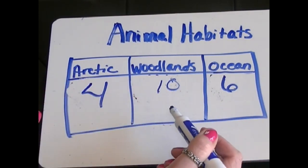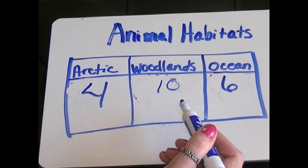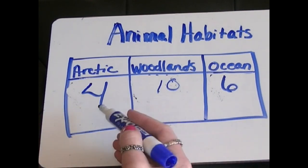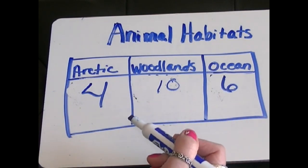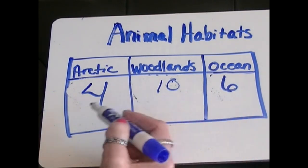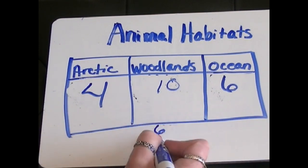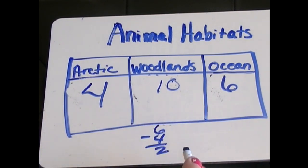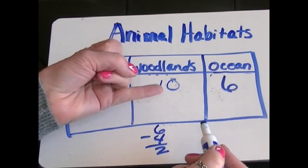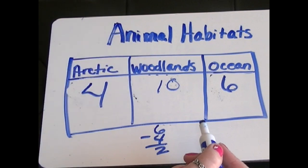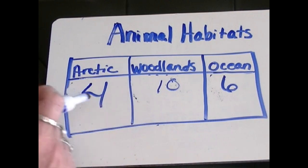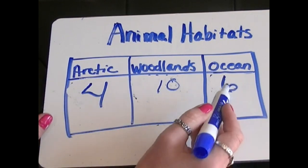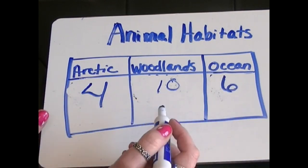I have another question for you. How many less Arctic animals were there than ocean animals? You could figure that out a couple different ways. You could subtract six minus four, which is two. Or you could count up from four to six. Four, five, six. Oh, gee. I got two. Okay. So there were two less Arctic animals than ocean animals. Very good job.